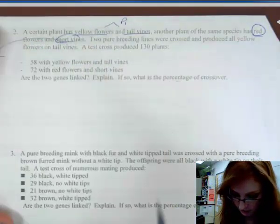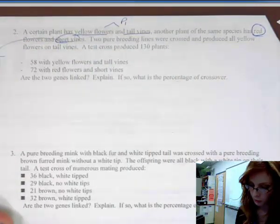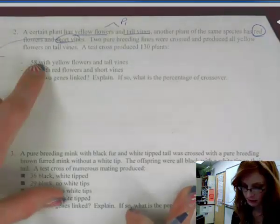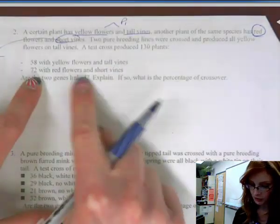So that's parent number two. Two pure breeding lines were crossed and produced all yellow flowers on tall vines. A test cross produced 130 plants, 58 yellow tall, 72 red short.